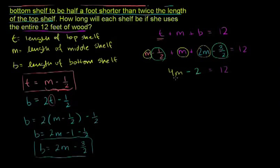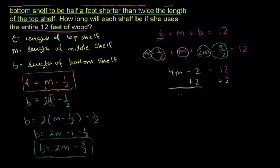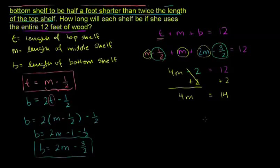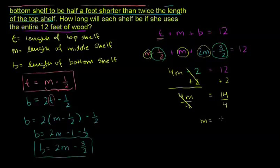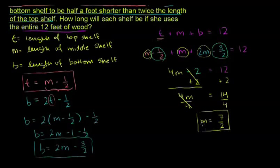To isolate M, we add 2 to both sides: 4M = 14. Then divide both sides by 4: M = 14/4, which equals 7/2 feet, or 3 and 1/2 feet. So we've solved for M, but we still need to solve for T and B.